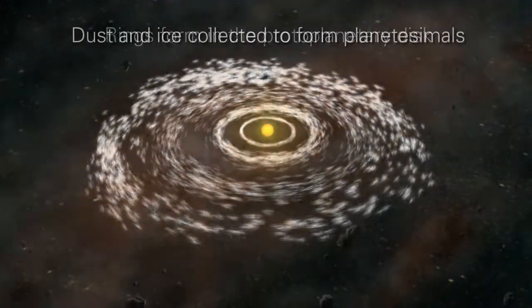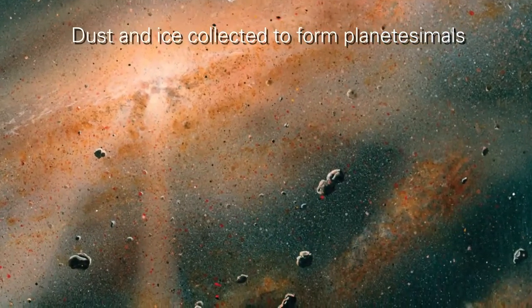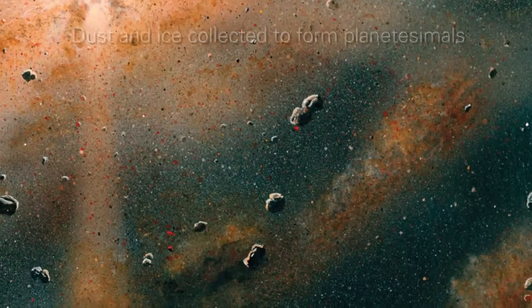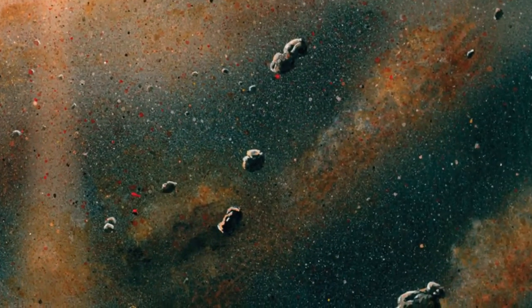Within a ring, particles of dust and ice stuck together to form larger masses called planetesimals. Countless collisions of planetesimals eventually built larger bodies.